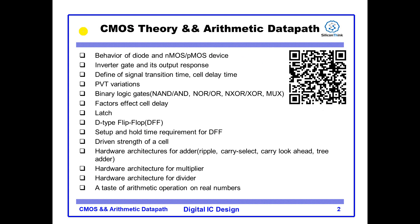In the first chapter, I will talk about CMOS theory and arithmetic data path. This is the fundamental of digital circuit design, so I will cover all these topics in this chapter. This chapter is free on YouTube — you can scan the QR code here to get the link.